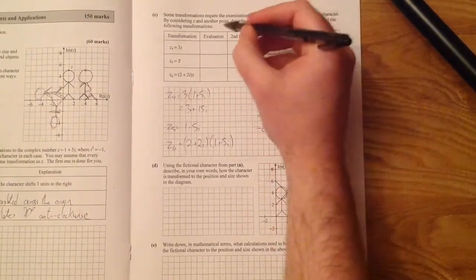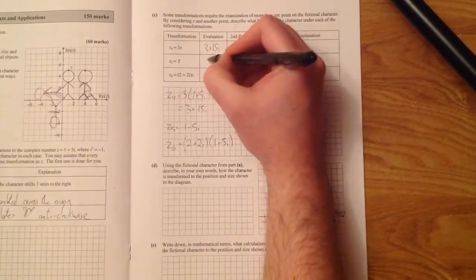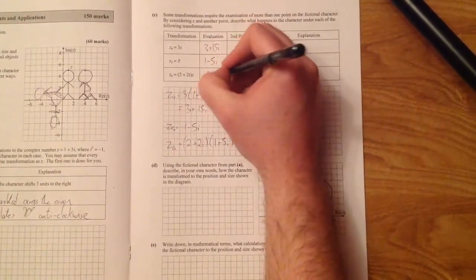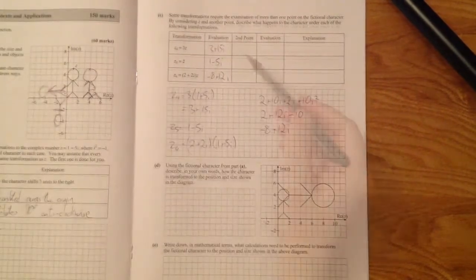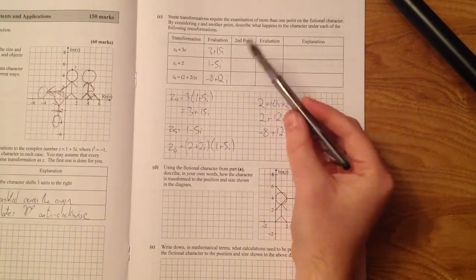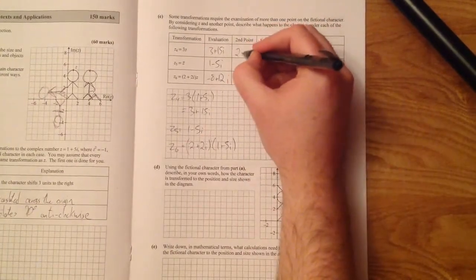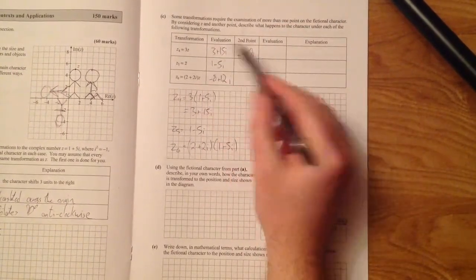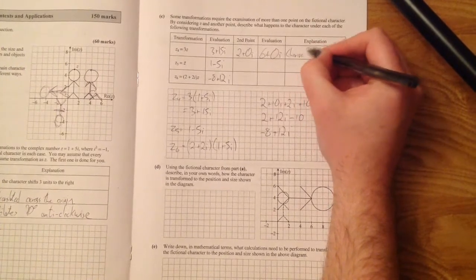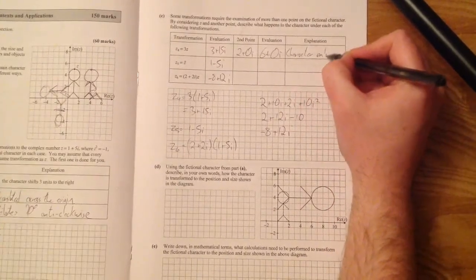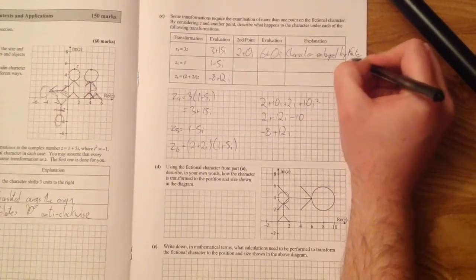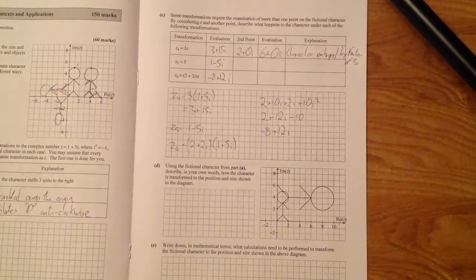So that's what you're going to fill in for the evaluation. This one was 3 plus 15i. This was 1 minus 5i. And this one was minus 8 plus 12i. For this part here where you had to pick a second point, you needed to pick a second point from the character. So let's take this one here, 2, 0. So 2 plus 0i. And if I evaluate it the same way, multiplied by 3, I get 6 plus 0i. And the explanation is a character enlarged by a factor of 3. So in fact, when you multiply by 3, you enlarge the character by a factor of 3.